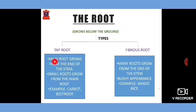In tap root, the main root grows from the end of the stem and small roots grow from the main root. Tap roots are commonly found in carrot, beetroot, etc. Fibrous roots are the roots in which many roots grow from the end of the stem giving a bushy appearance. Fibrous roots are commonly found in wheat, rice, etc.